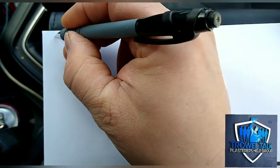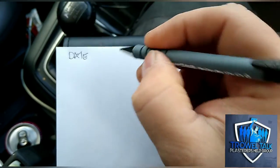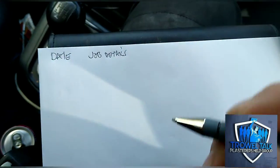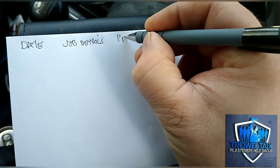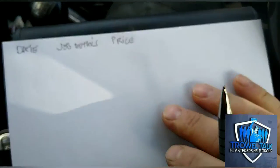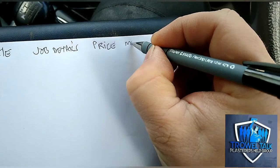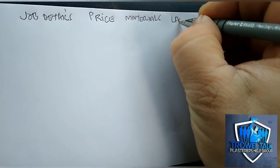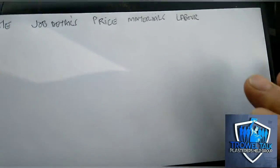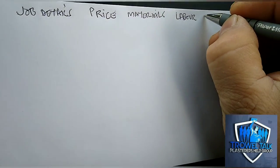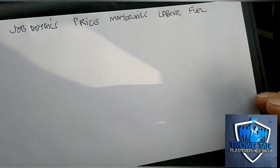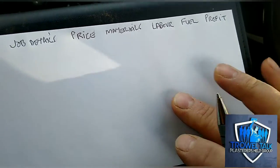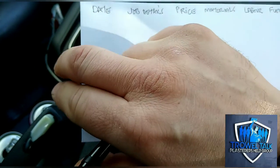The first thing you're going to include is the date. Then you want your job details. Then we're going to look at the price - that's the price you've quoted to the customer. Next column is materials, then labor, and we'll do seven columns because we'll stick fuel in as well. These are going to be your direct costs, and then profit at the end. You can tweak, change, add and remove things whatever suits you.